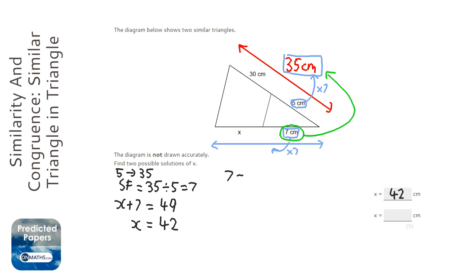It could be that the seven corresponds with the 35 centimeters, so scale factor then would be 35 divided by 7 which is 5.